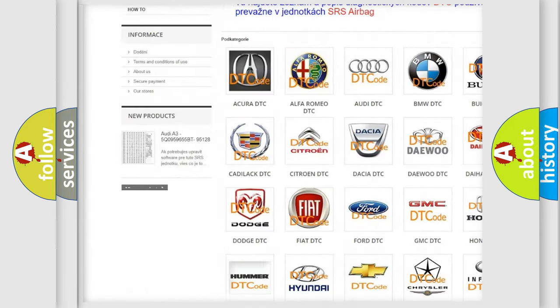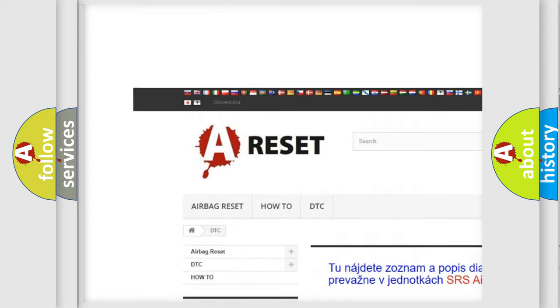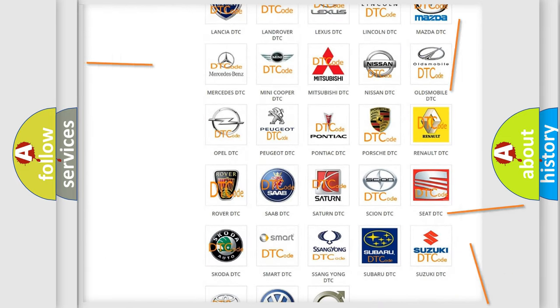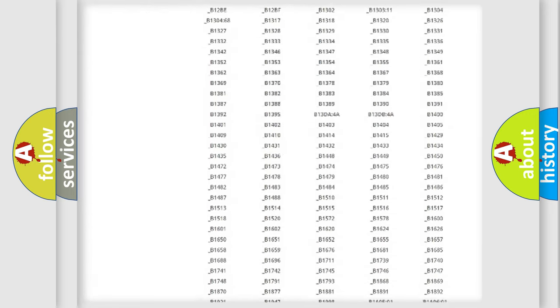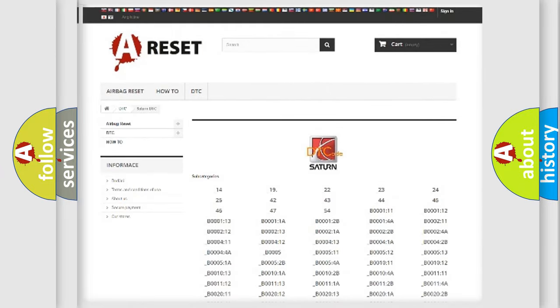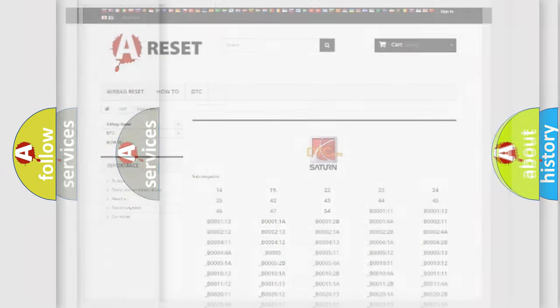Our website airbagreset.sk produces useful videos for you. You do not have to go through the OBD2 protocol anymore to know how to troubleshoot any car breakdown. You will find all the diagnostic codes that can be diagnosed in Saturn vehicles. Also many other useful things.